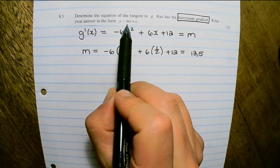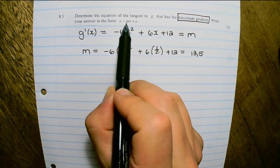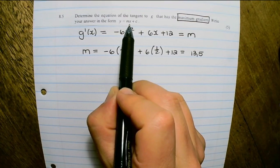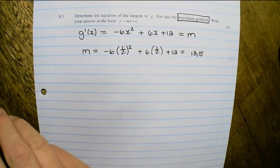Now to find the equation of a tangent, I need a gradient, an x value and a y value. We already have a gradient and the x value. We just need a y value.